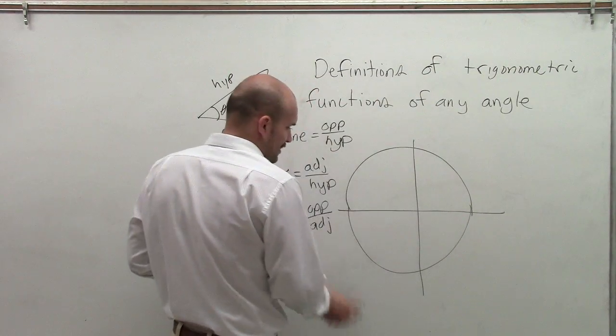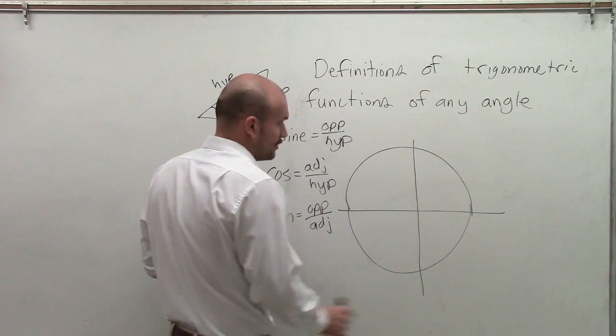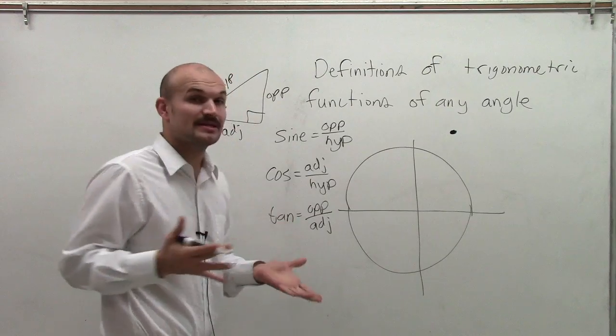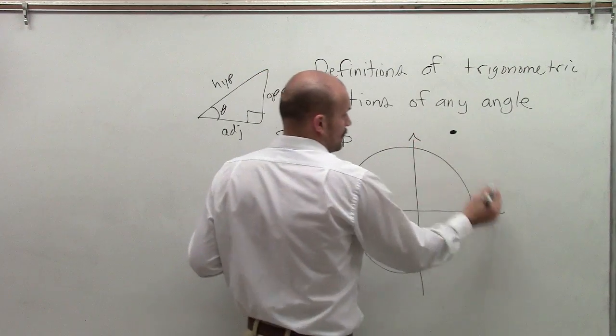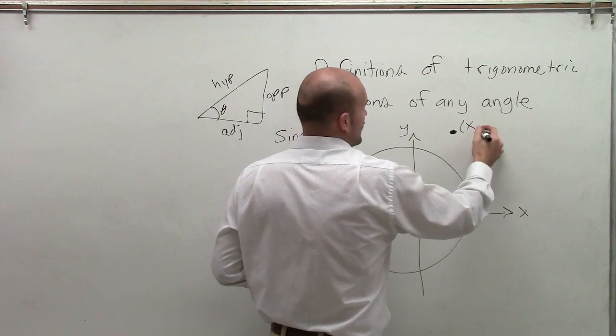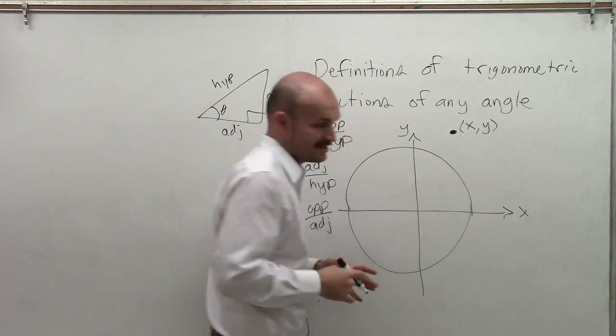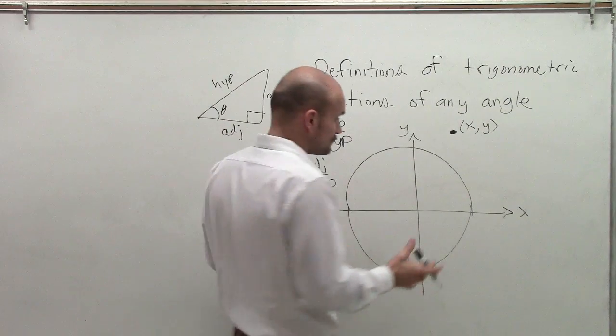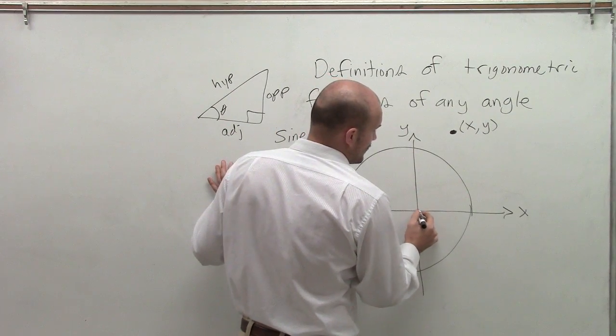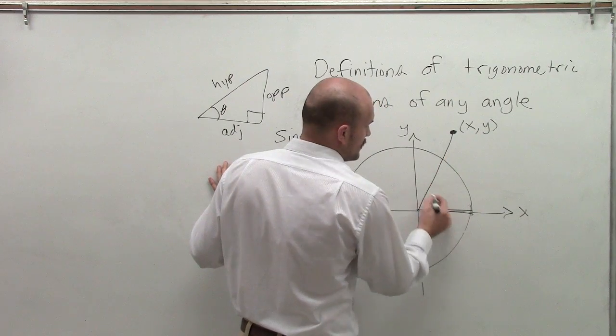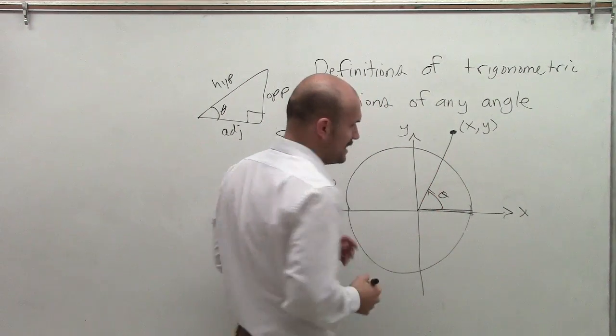But what about if I pick a point that's not on the unit circle, let's say over here? This is still going to be a coordinate with an x and y-axis. We can also draw an angle with this, where here's my initial side and here's my terminal side. Therefore, I'm still creating a theta.